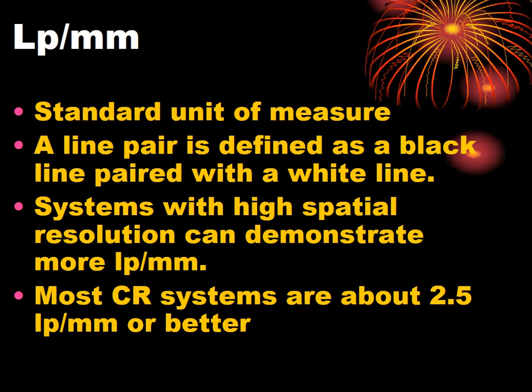Line pairs per millimeter is a standard unit of spatial resolution measurement. We take an image of a line pair test tool — a line pair is simply a black line paired with a white line — and count how many pairs fit into one millimeter. Systems with high spatial resolution can demonstrate more line pairs per millimeter. Most CR and DR systems are 2.5 line pairs per millimeter or better, with many achieving 3.5 to 4 line pairs per millimeter.